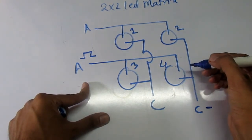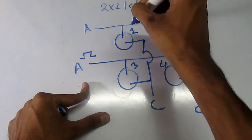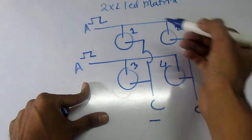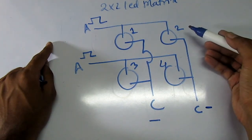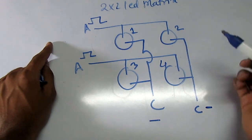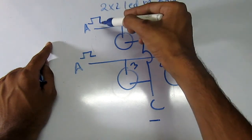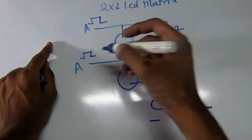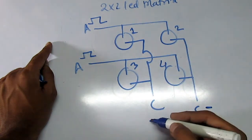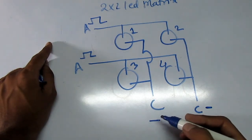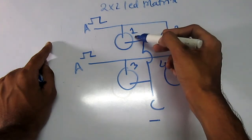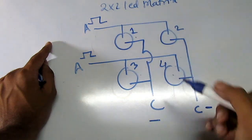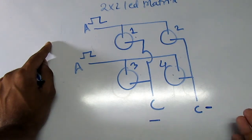LED 4 will turn on. Suppose we have to activate LED 1 — we give a high pulse at the anode and a low pulse at the cathode, so LED 1 will turn on. Now suppose we have to activate LED 2 and LED 3 simultaneously. We activate the anode of LED 2 and the cathode with a low pulse, and activate the anode of LED 3 with its cathode low — but what happens is LED 1, 2, 3, and 4 all turn on, because all anodes have a high pulse and all cathodes have a low pulse.